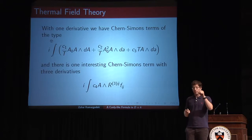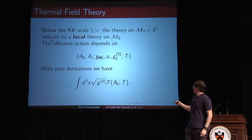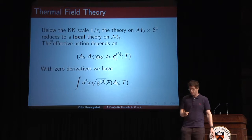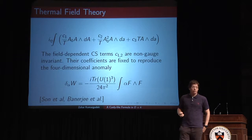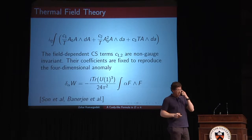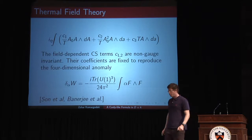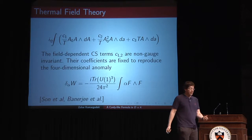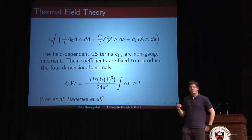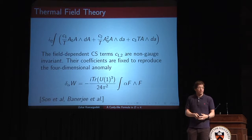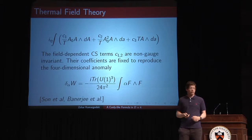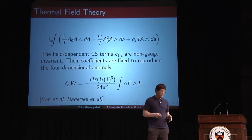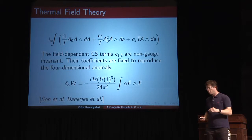The Chern-Simons terms C1 and C2 look like field-dependent Chern-Simons terms because they contain the chemical potential, which can be an arbitrary function of space in hydrodynamics. They are not gauge invariant under small gauge transformations. But if you remember the four-dimensional theory may have various anomalies, these non-gauge-invariant terms C1 and C2 are completely fixed — their coefficients are fixed in terms of the U(1) cubed anomaly of the associated U(1) symmetry, through anomaly matching across dimensions.